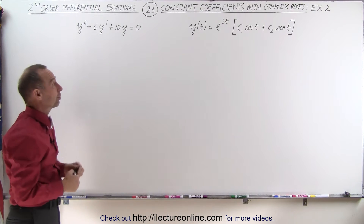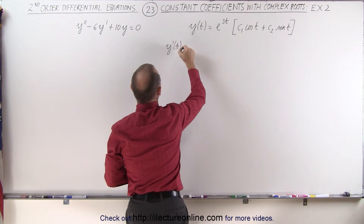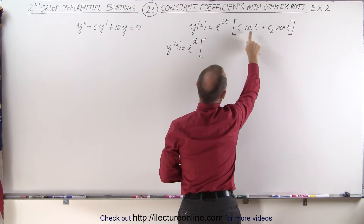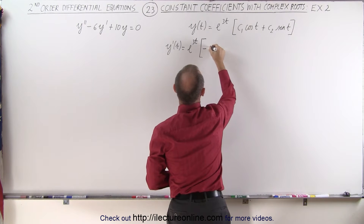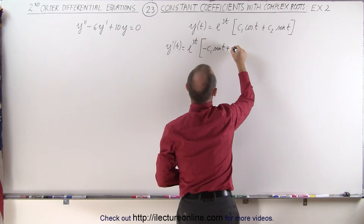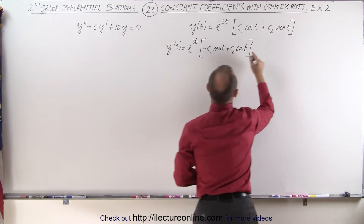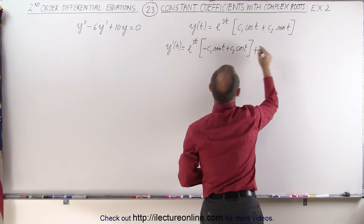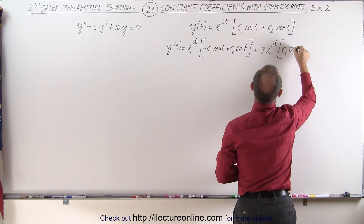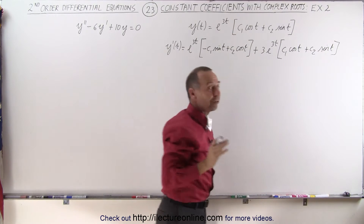Let's find the first derivative, y prime. It equals: we take the first term, e to the 3t, times the derivative of the second — the derivative of cosine is negative sine, so this becomes minus c1 times sine of t, and the derivative of sine is cosine, so plus c2 times cosine of t. Then plus the second times the derivative of the first — the derivative of e to the 3t is 3e to the 3t — giving us c1 cosine of t plus c2 sine of t.